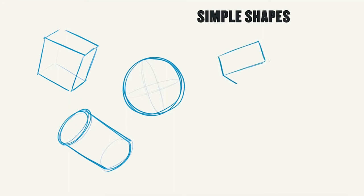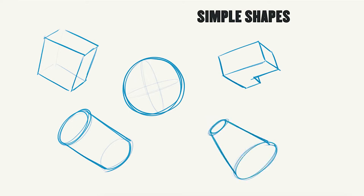When drawing a complicated object like a motorcycle, we also need to be able to adjust these shapes — for example, cutting certain parts out of a rectangle, or changing a cylinder from small to big.